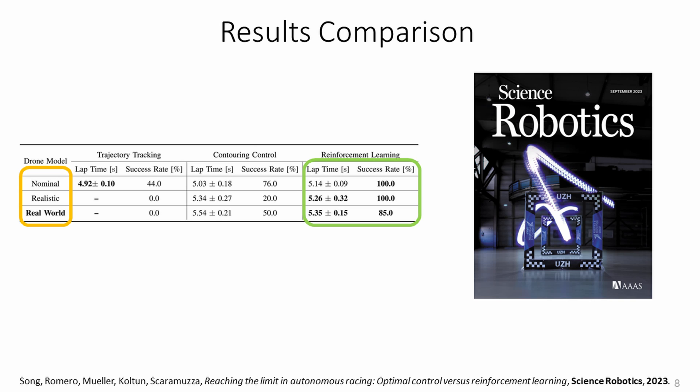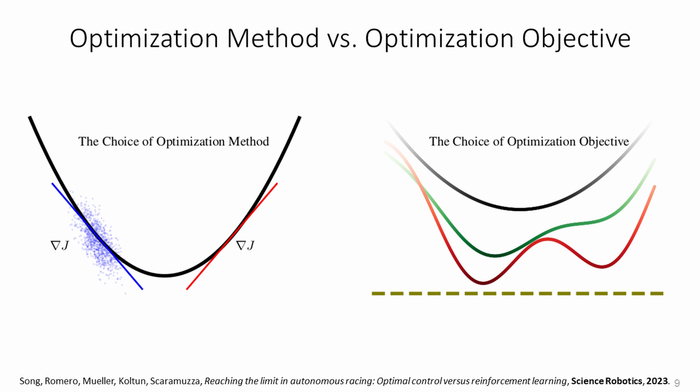This is due to the fact that reinforcement learning is able to optimize a reward that is closer to the final task, whereas optimal control architectures need to pass through an intermediate representation of the task, in the shape of a trajectory or a path. This comparison can be analyzed in two different dimensions: the choice of optimization method, how we solve the problem, or the choice of optimization objective, which problem we solve.